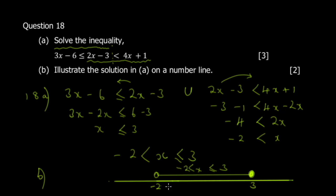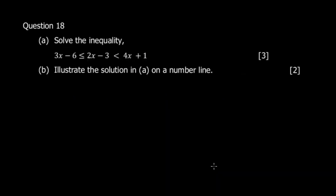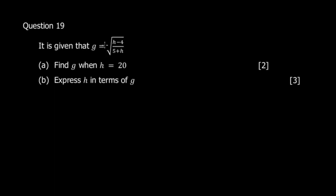You can write all numbers in between but focus on the extremes. The hollow circle at -2 shows it's not included, and the filled circle at 3 shows it is included. That completes question 18. Let's move to question 19.